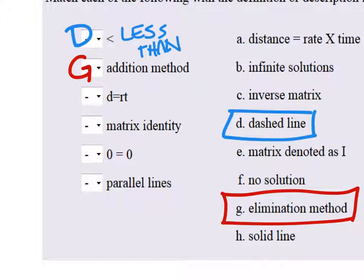D equals R times T. Well, D represents distance, R is rate, and T is time. A.